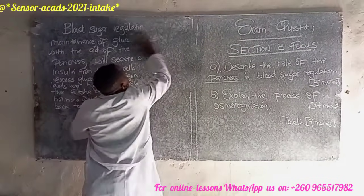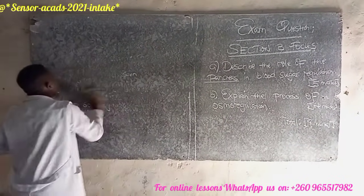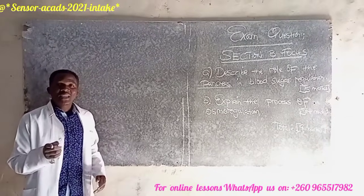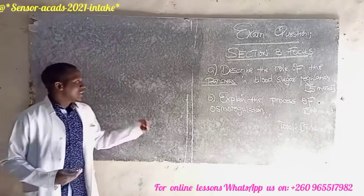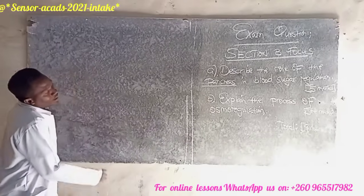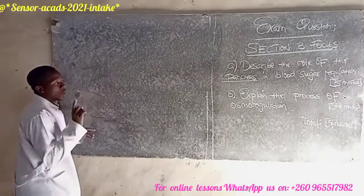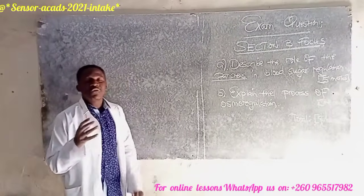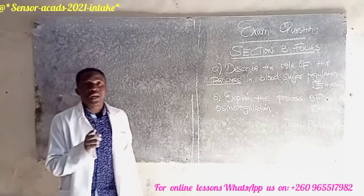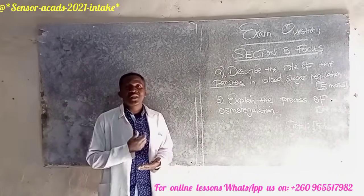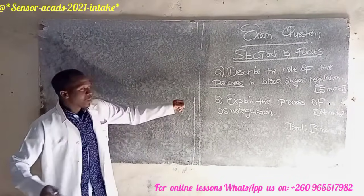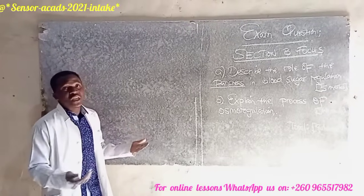Now let's go to question B: explain the process of osmoregulation. In simple terms, this question asks how osmoregulation happens and what is involved. The word 'osmo' comes from osmosis, which is the movement of water molecules from a region of higher water concentration to a region of lower water concentration across a partially permeable membrane. The word 'regulation' simply refers to maintenance.